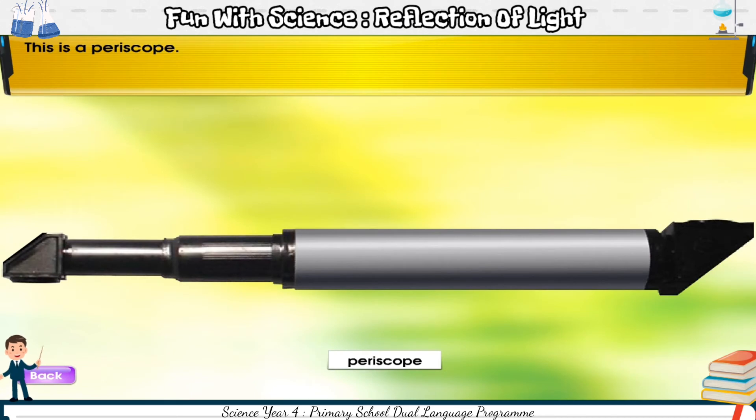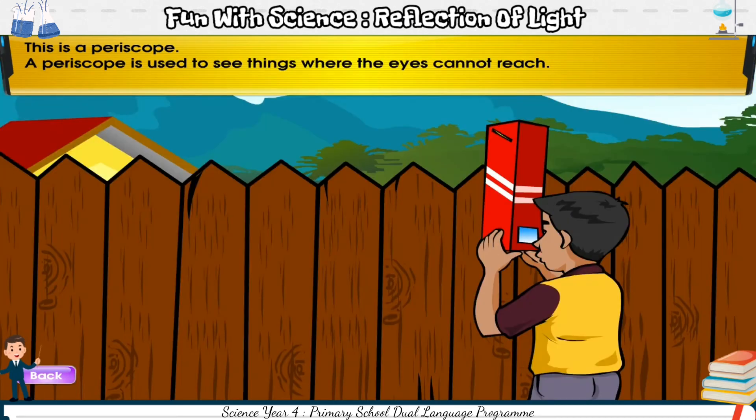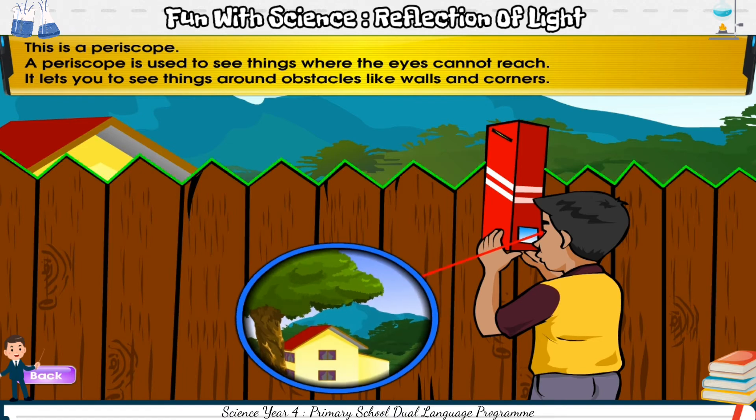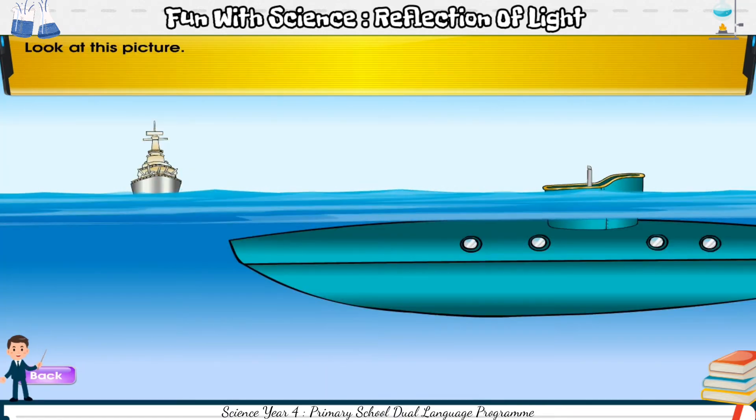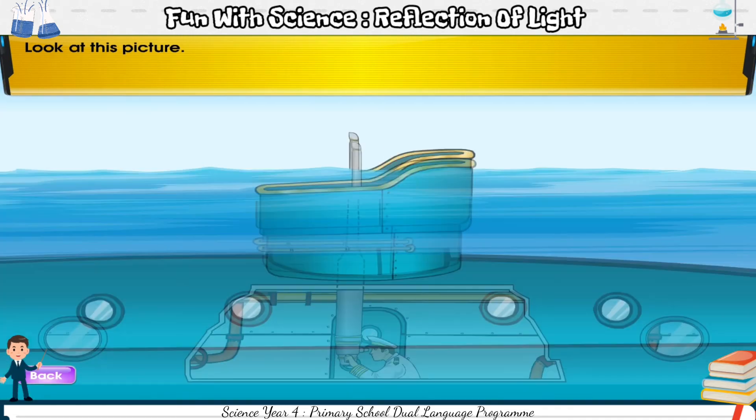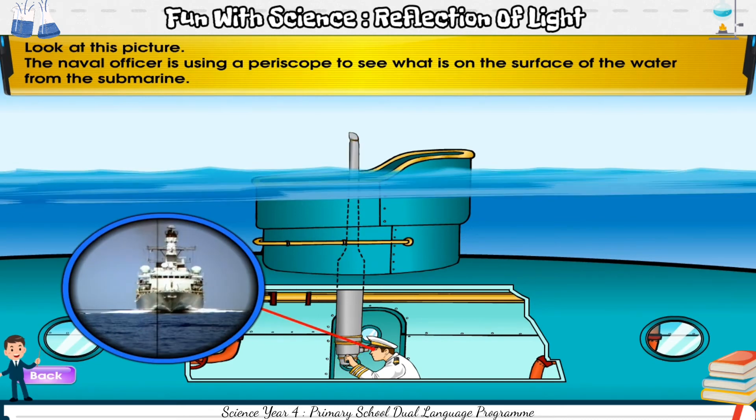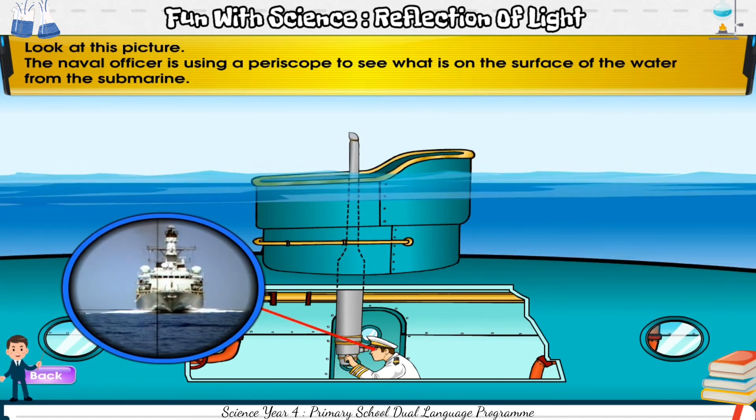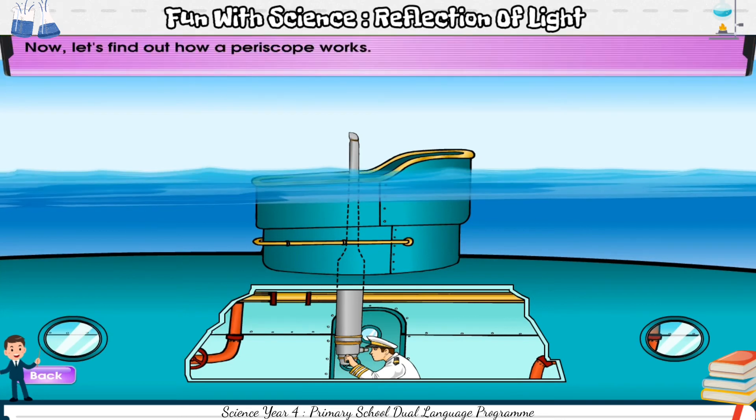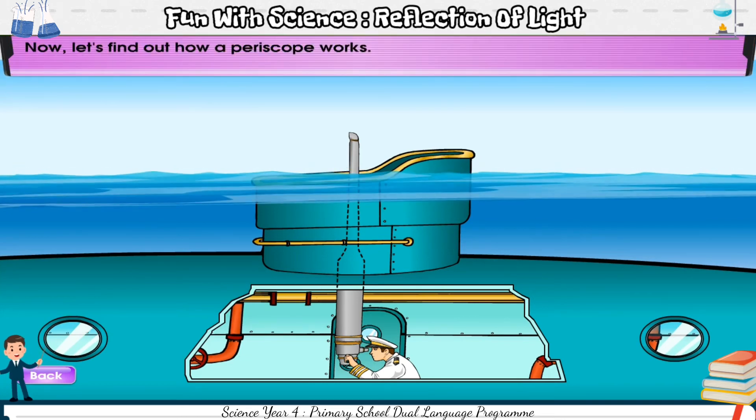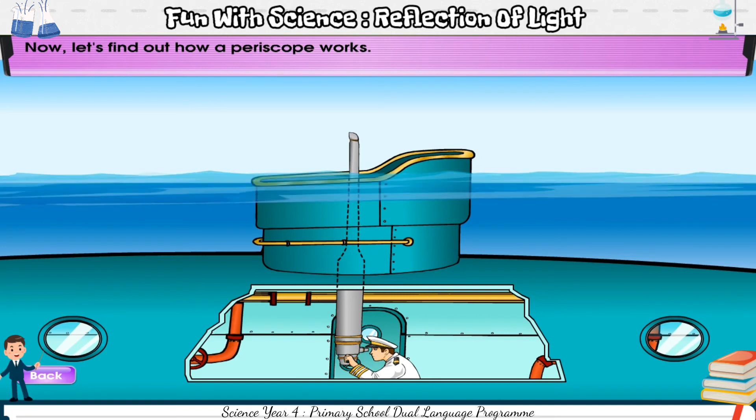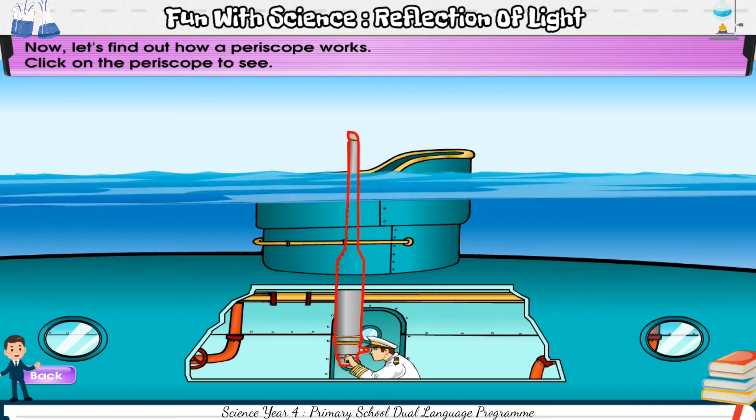This is a periscope. A periscope is used to see things where the eyes cannot reach. It lets you see things around obstacles like walls and corners. Look at this picture. The naval officer is using a periscope to see what is on the surface of the water from the submarine. Now, let's find out how a periscope works. Click on the periscope to see.